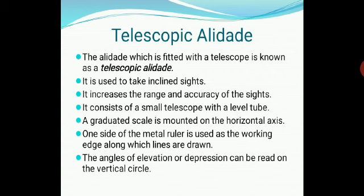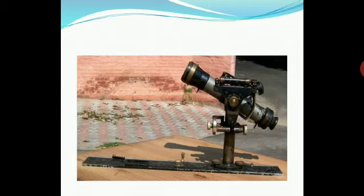The telescopic alidade consists of a small telescope with a level tube, comprising graduated scales mounted over a horizontal axis. One side of a metal ruler serves as the working edge along which lines can be drawn. Angles of elevation or depression can be read on the vertical scale. As shown in the image, the telescopic alidade can be inclined toward the sky to take readings at particular inclined angles, and it can be rotated upward as well as downward.